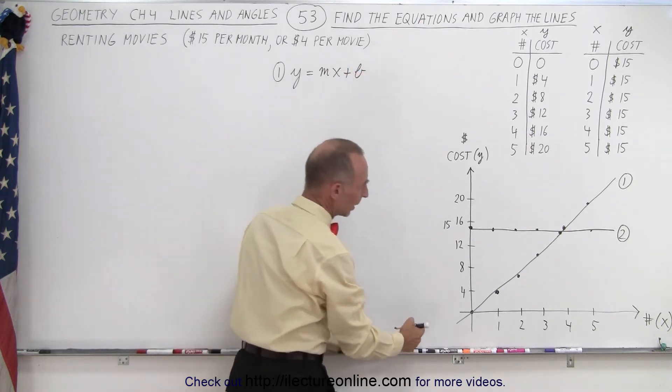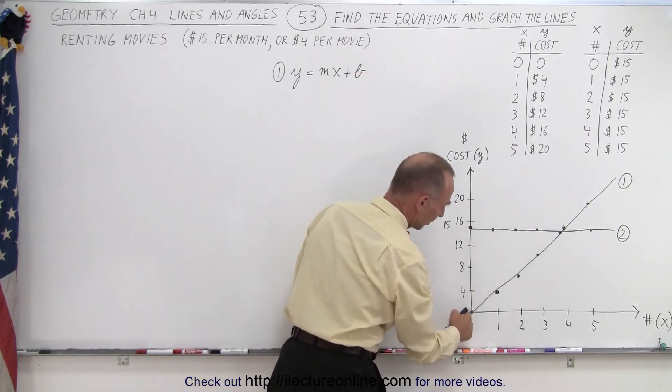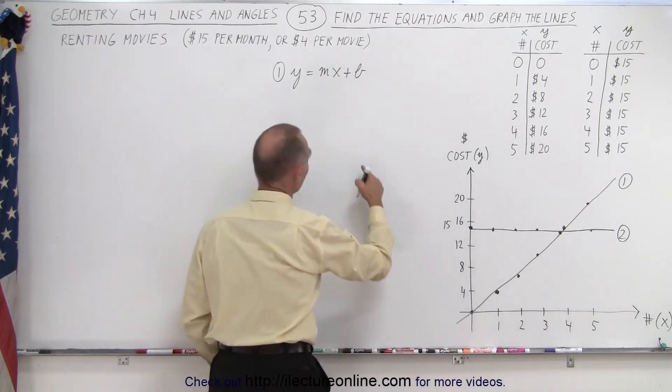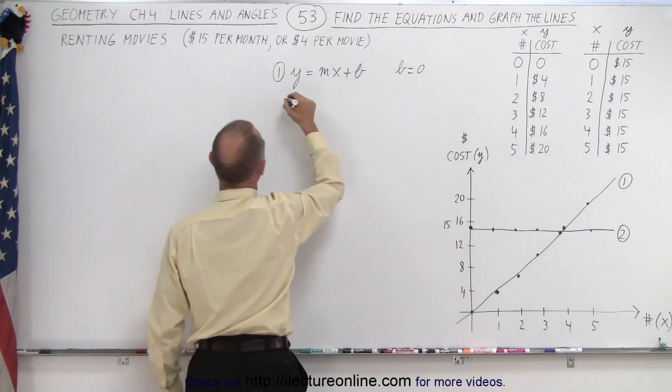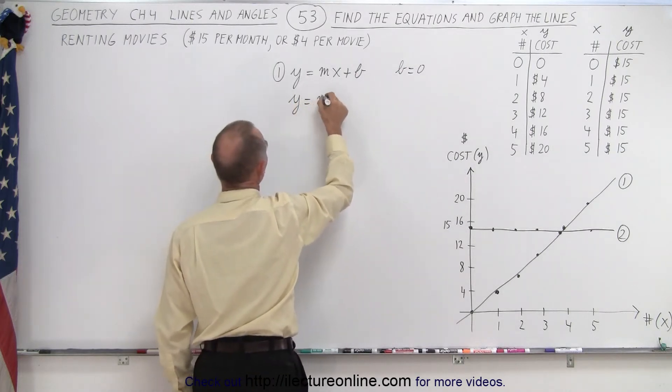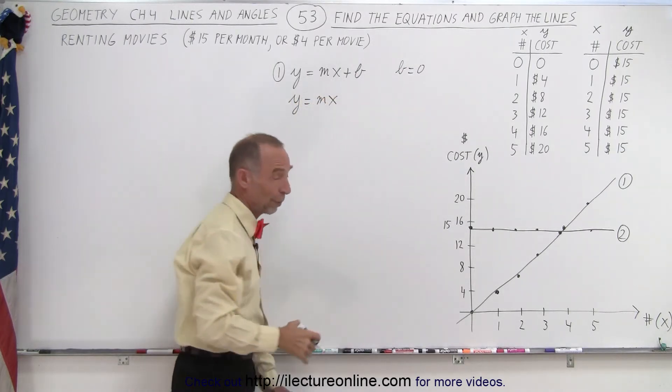Here we can see that clearly there's a y-intercept. It intercepts when y equals zero. So here we can say that b equals zero. So therefore we can write that y is equal to mx. We don't have to write plus zero.